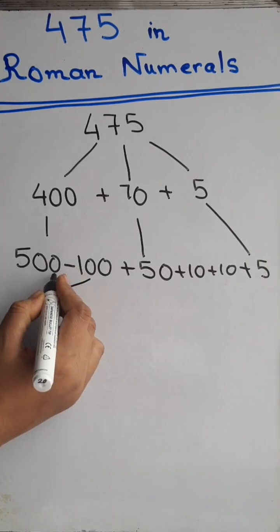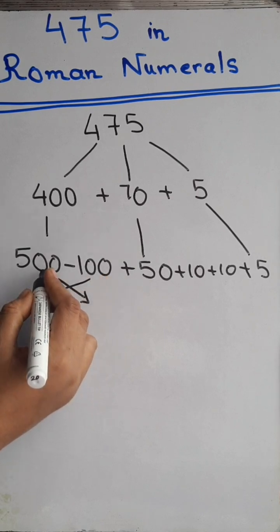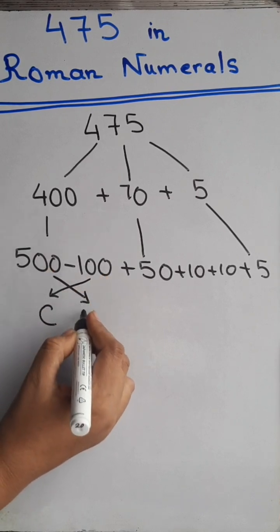But since there is a negative sign, they will be interchanged. So, C will come here and the 500 Roman numeral D is coming here.